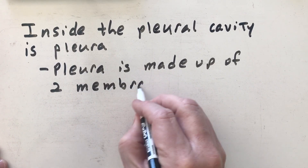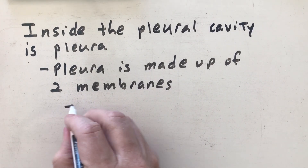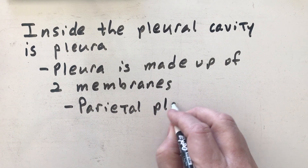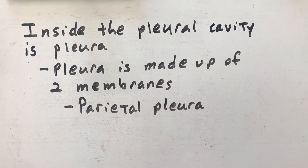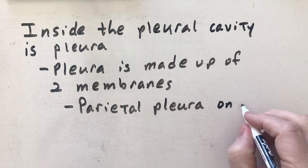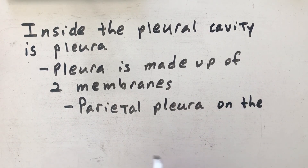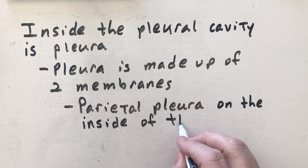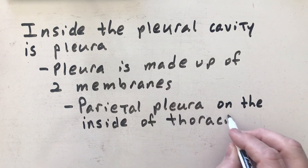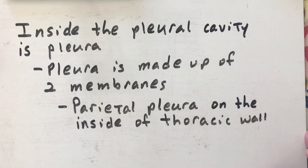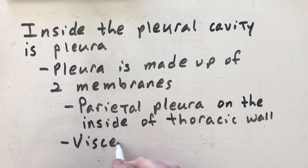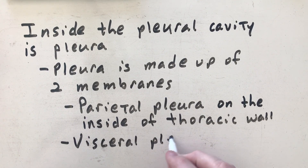One of those membranes is called the parietal pleura. The parietal pleura is on the inside of the thoracic wall. And then you have the visceral pleura, which is going to be covering the lung — it's a membrane over the lung.